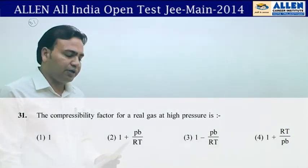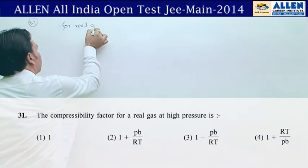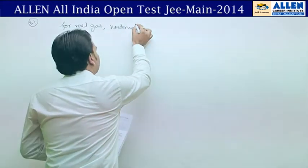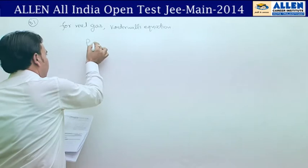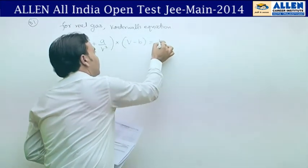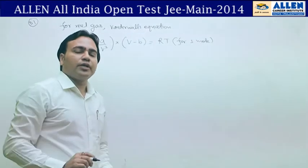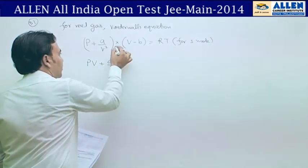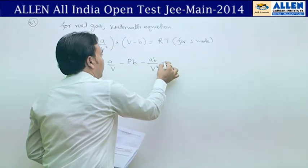In question number 31, compressibility factor has been asked for real gas. For real gas, van der Waals equation is (P + a/V²)(V - b) = RT. For 1 mole, expanding: PV - Pb + a/V - ab/V² = RT.